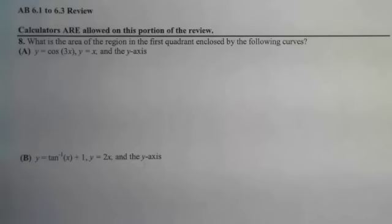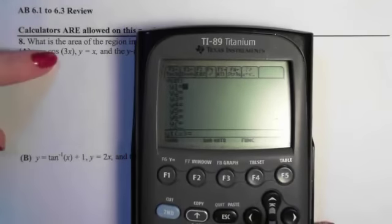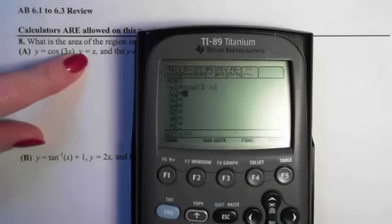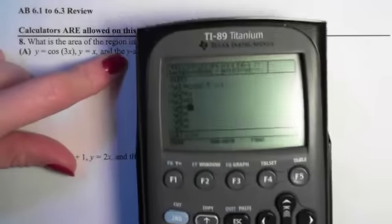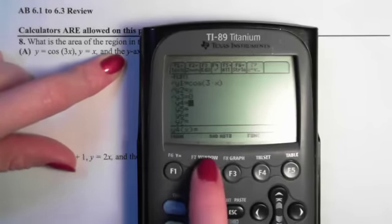So I'm going to go into my Y editor and I'm going to put those curves in there. So I have y = cos(3x), and I have y = x, and then I've got the y-axis, which is x = 0. And I'm going to graph those, so I'll just do a standard zoom 6.